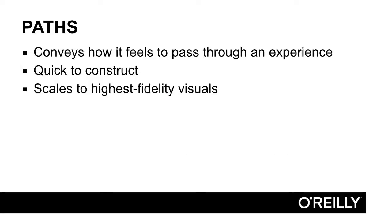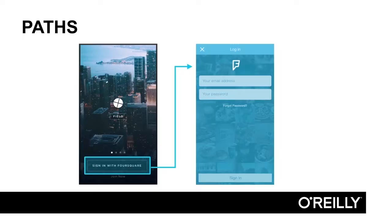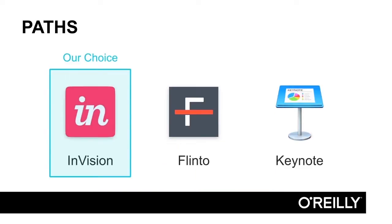Next up are paths — basically click-through prototypes. These guide users through an experience step by step. Compared to visions, paths present a more concrete reality. They support understanding how it feels to pass through an experience, and as such, they excel at testing task completion and basic flow. Designers build paths by exporting a large set of full screens and then drawing visual hyperlinks between them. Paths are extremely quick to build — it's not uncommon to tweak designs until 15 minutes prior to testing, then quickly rig up a path-based prototype. This also means paths scale to highest fidelity visuals, since you're exporting directly from your graphic design program. In this course, InVision will be our path builder of choice.